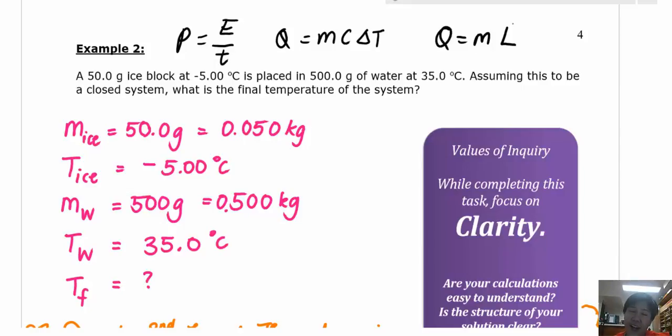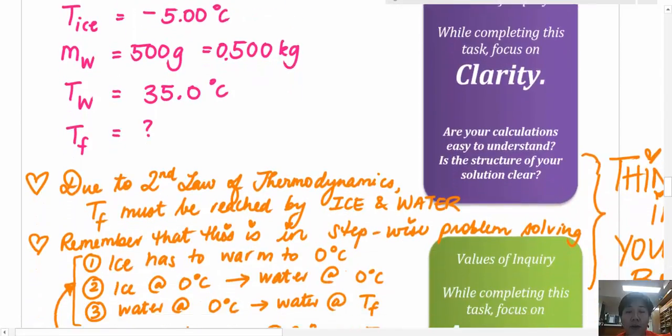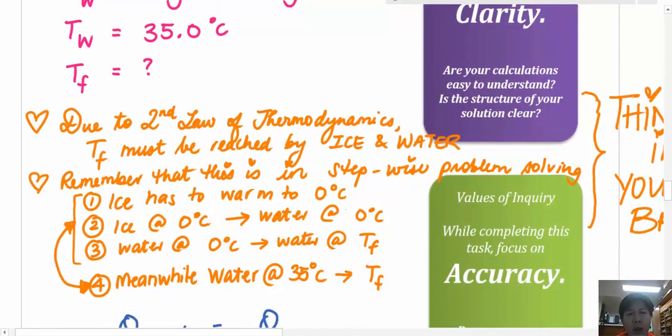If you've had a think, you can have a look at what should be going on in your head. I've put this in orange. Due to the second law of thermodynamics, you should know that if it's a closed system, then the heat gained by one object is equal to the heat lost by another because obviously energy can't be created or destroyed. It's really just transferred.